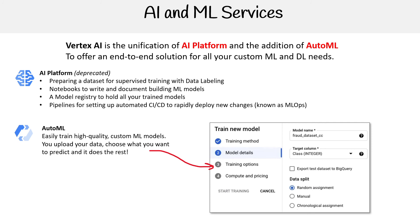I had a bit of a hard time finding this service. I was typing 'AutoML,' but really there's a thing in there called Tables. You can build and deploy machine learning models on structured data. You upload a data set, and from there you say you want to analyze this tabular data through AutoML.